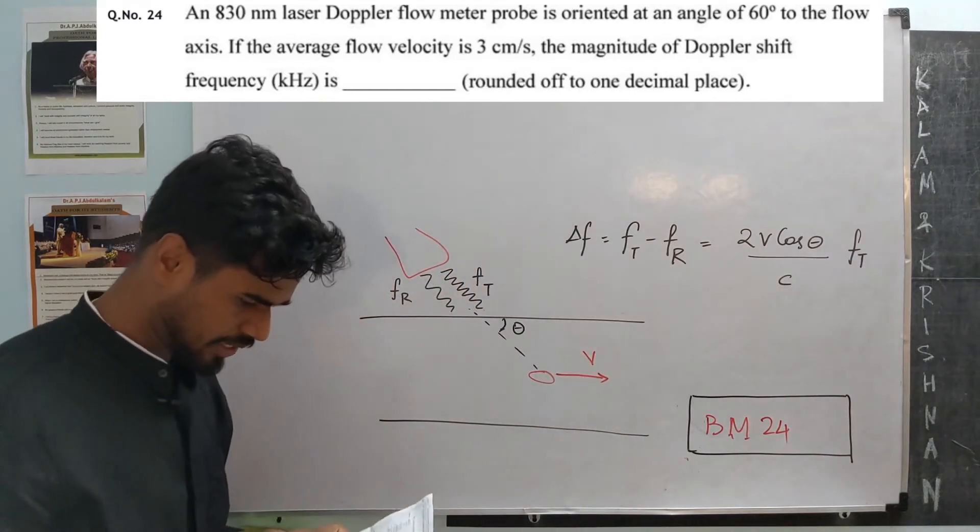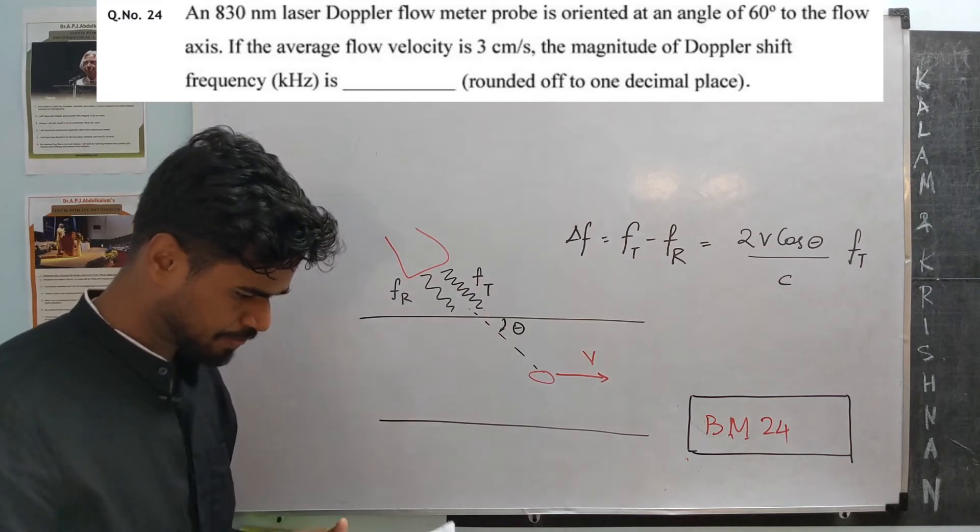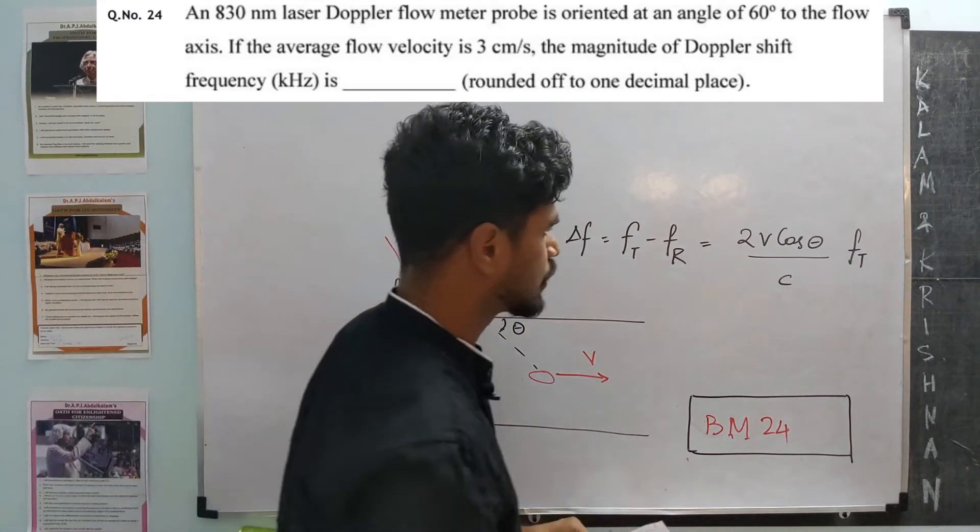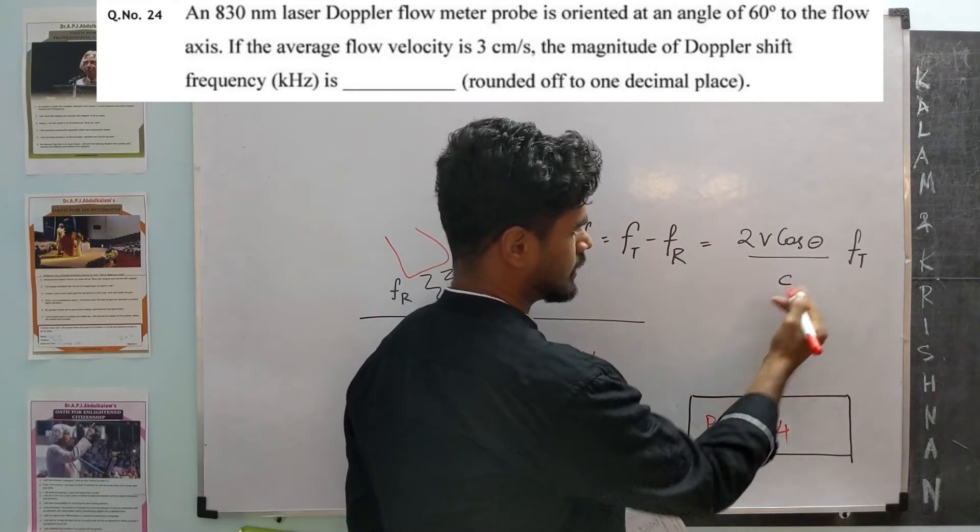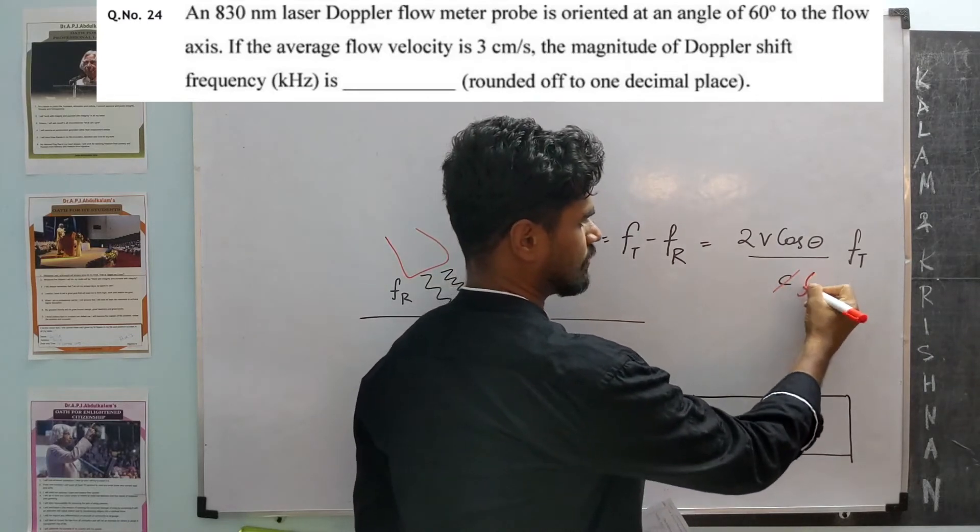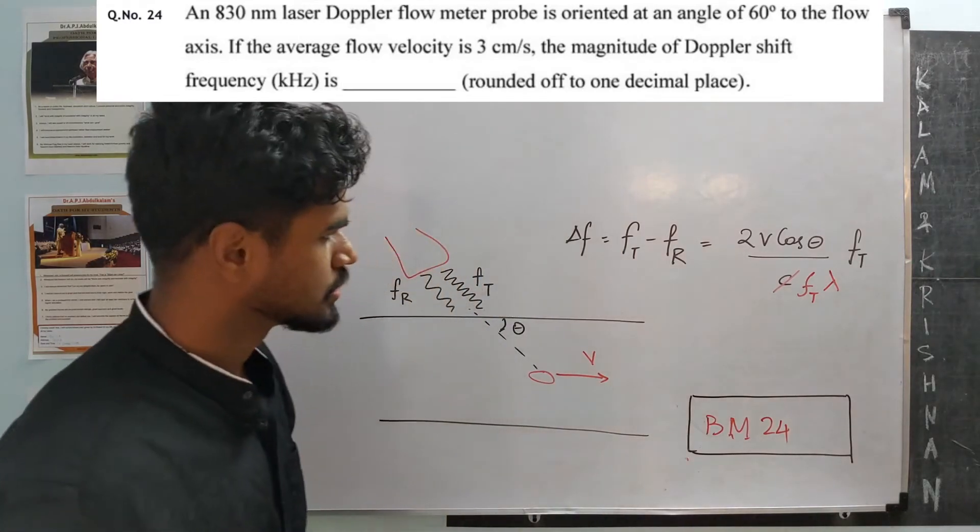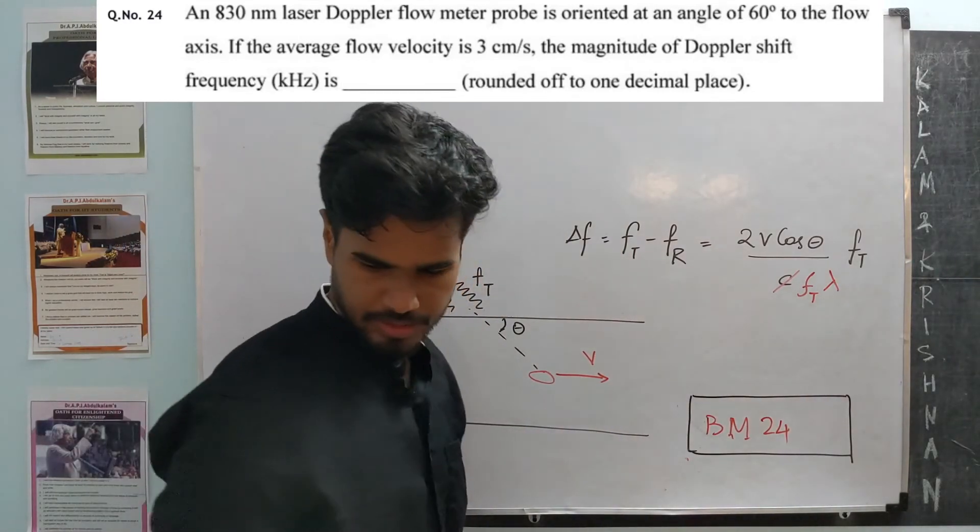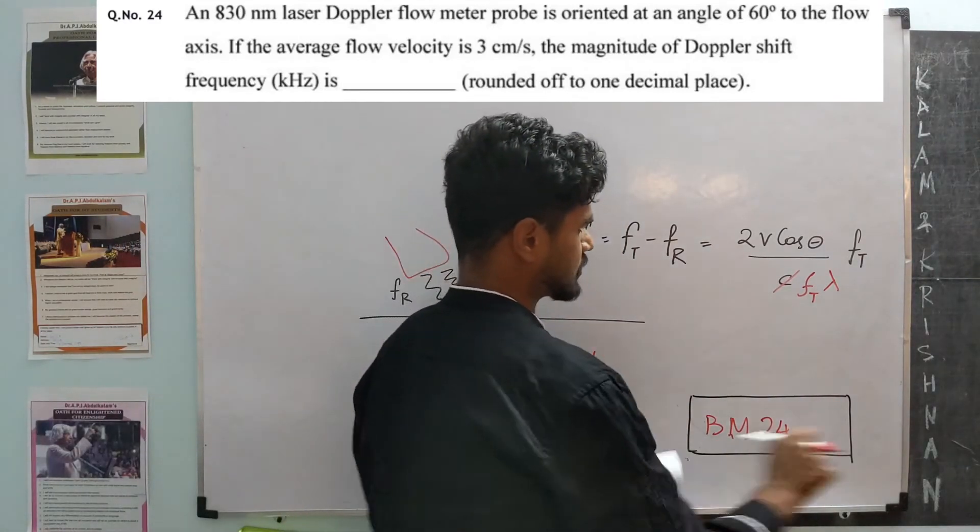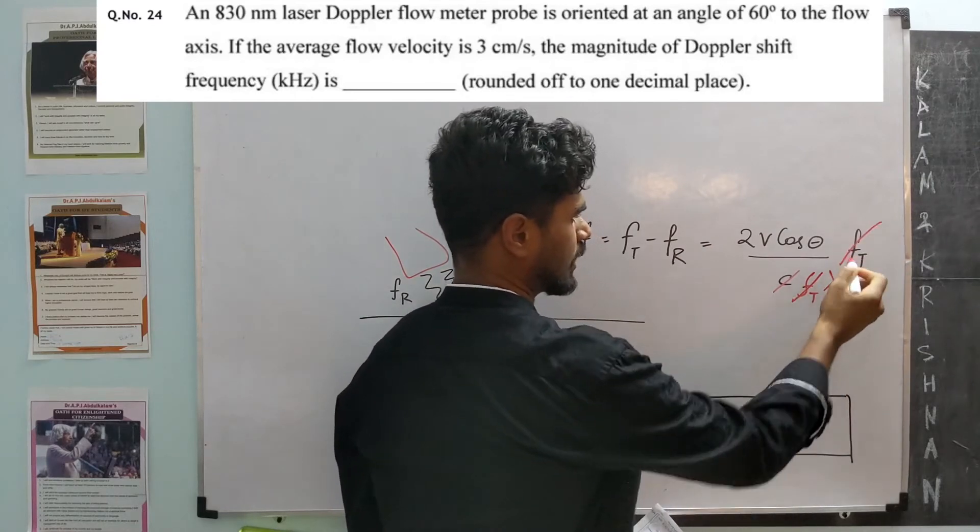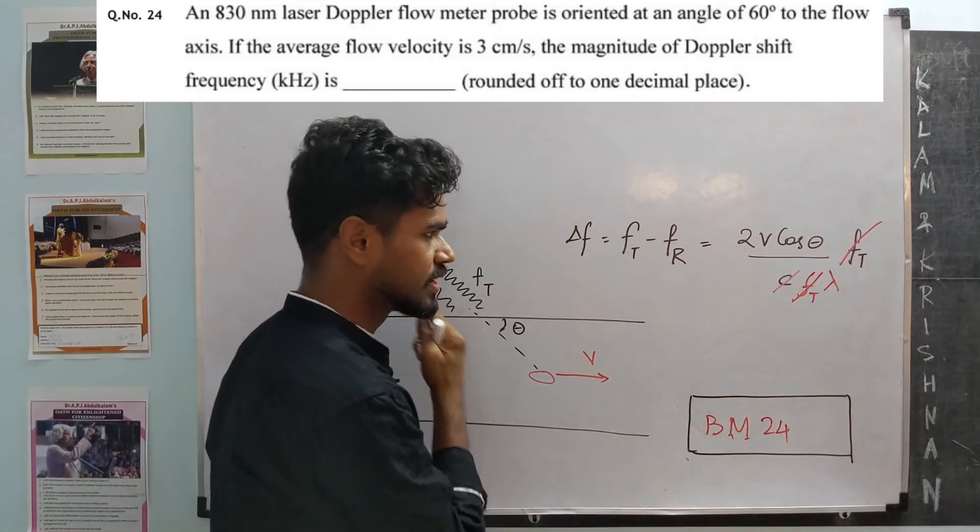So based on the information given here, we are given the wavelength of the Doppler flow meter. So let us rewrite this a bit. c equals f times lambda. So once we do that, the term ft is not needed to calculate the Doppler shift.